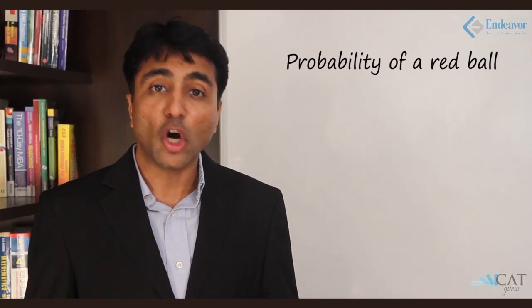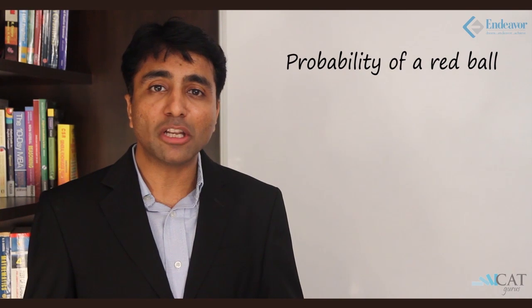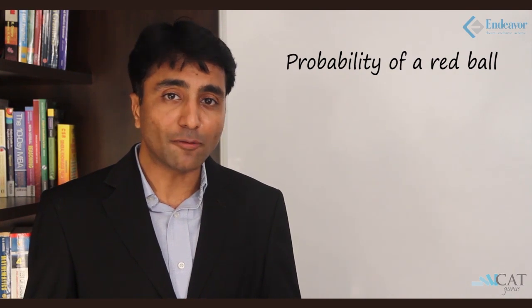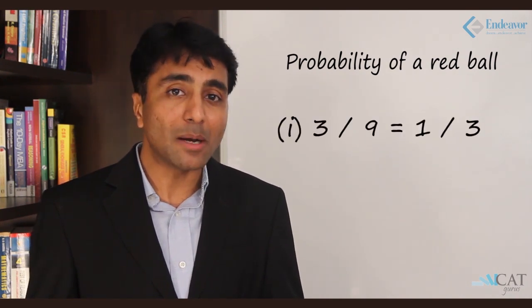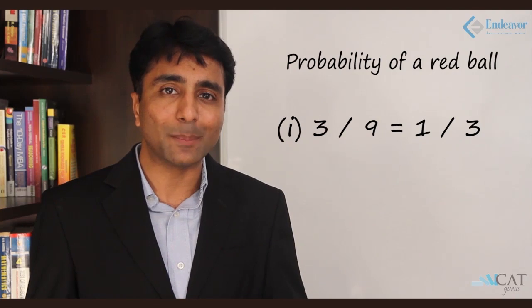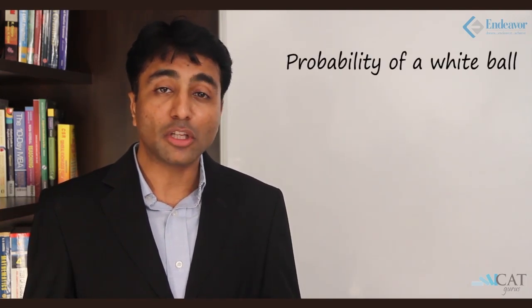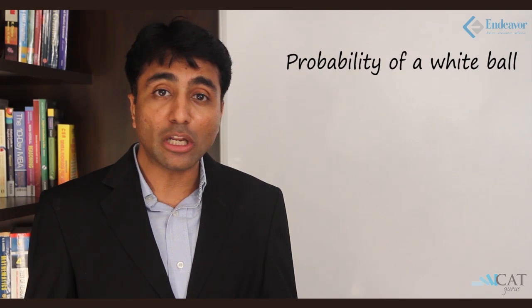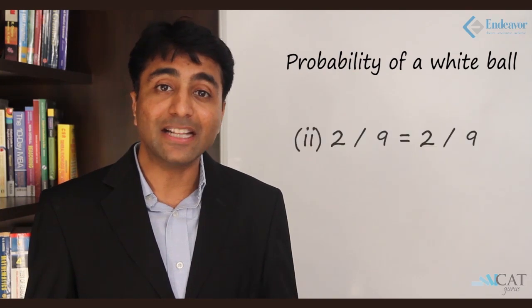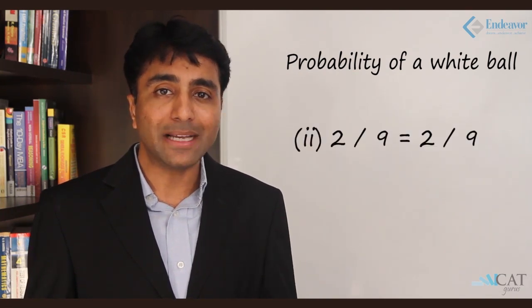First case — getting a red ball. There are 3 red balls in a box out of a total of 9. Hence the probability will be 3 by 9, that is 1 by 3. Second case — getting a white ball. There are 2 white balls out of 9. Hence the probability is 2 by 9.